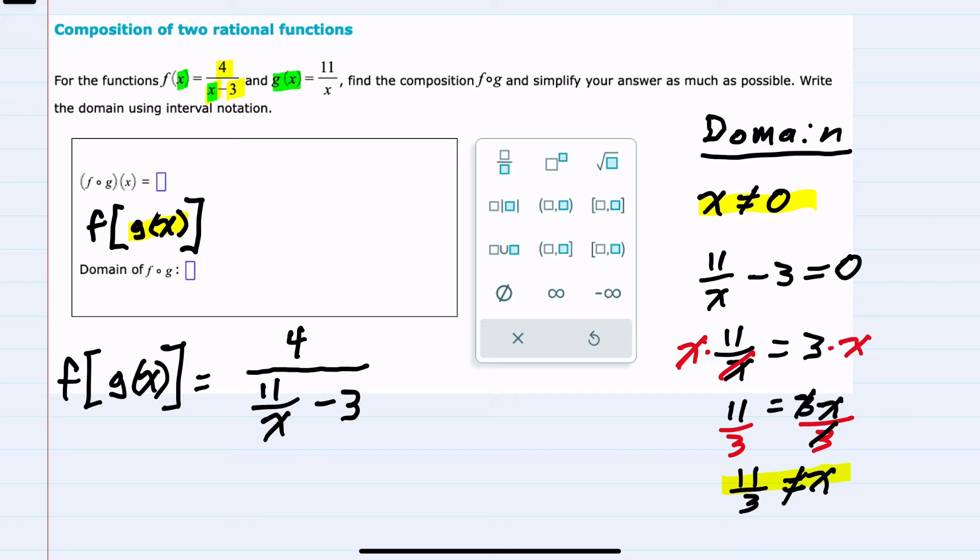So omitting those two values, x can be anything from negative infinity to zero, not including zero, union everything from zero to 11 thirds, not including zero or 11 thirds, and then another union with everything from 11 thirds to positive infinity. Our domain here has everything except for the values zero and 11 thirds.